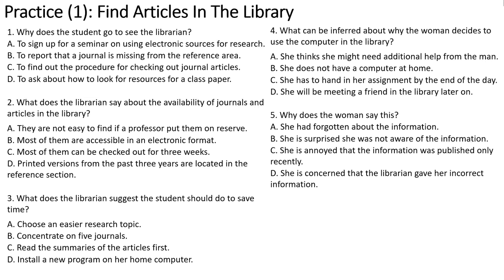We have printed versions of 20 or so psychology journals in the reference section. These are ones published within the last year. Now that I think about it, there's a journal named Sleep and Dreams. Yeah, the article I just copied is from that journal, so I've got to look at other sources. Actually, most of our material is available electronically now. You can access psychology databases or electronic journal articles through the library's computers. Cool. That's great.